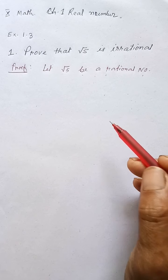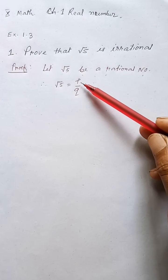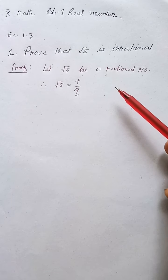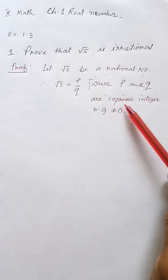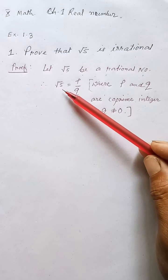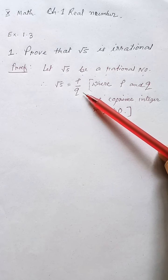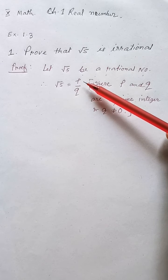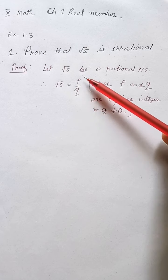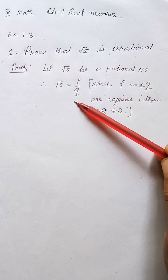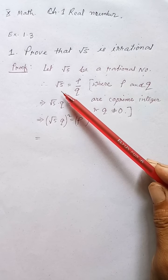It is written: let root 5 be a rational number. We know a rational number is always in the form of P by Q. So root 5 can be expressed as P by Q, where P and Q are co-prime integers. Co-prime integers means there is no common factor other than one — this fraction cannot be reduced any more.